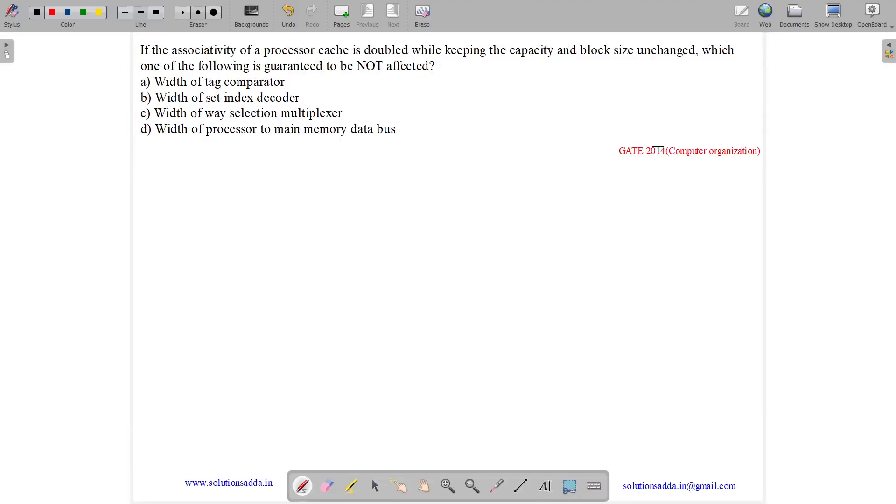This question belongs to computer organization subject and was asked in GATE CSE 2014 set 2. So the question states, if the associativity of a processor cache is doubled, while keeping the capacity and block size unchanged, which one of the following is guaranteed to not be affected?